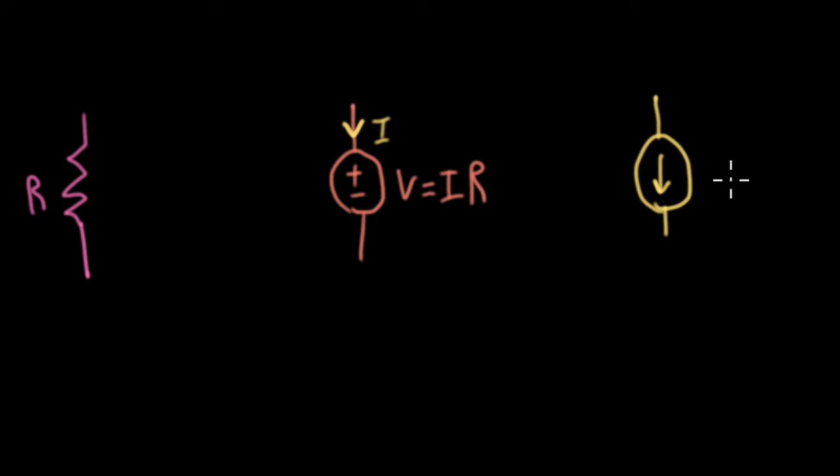Or I could write this as a current source like such. And I could say, okay, well, what's the current here? Well, that's going to equal V divided by R, where I'm measuring this voltage V across here like thus. Now, you're used to your controlled sources using a variable elsewhere in the circuit, but there's nothing that says I have to do that. And these are both absolutely equivalent descriptions as our usual resistor.